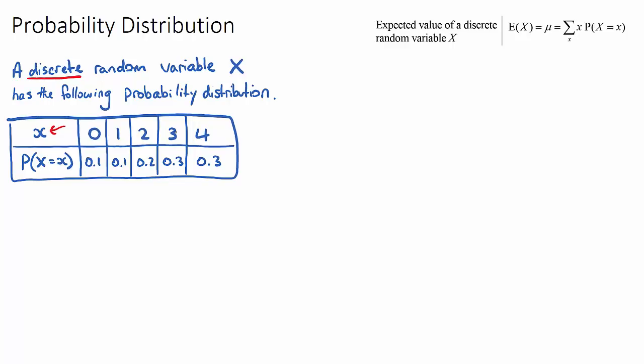So this top line is just going to be all of our possible outcomes, and the bottom line says the probability that our random variable, which is this capital X, which could be some randomly selected student, the probability that they get a certain score will change. Because looking at this example here, the probability that a randomly selected student gets a 0 is 0.1, and that's different to the probability of getting 4. So that's why they have to write the probability that our random variable equals x, and this x refers to any of these numbers in the top row here.